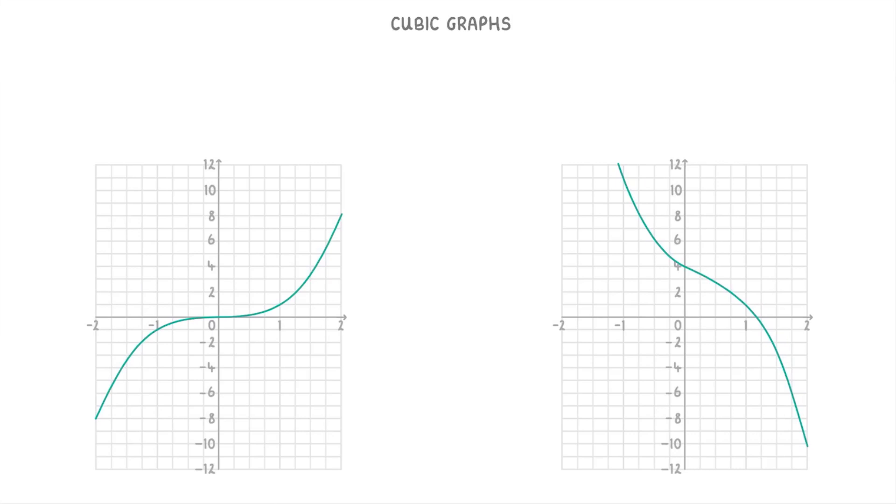The reason we call these graphs cubic is because their equations always contain an x cubed term. For example, this graph on the left, which is the most simple one you'll see, is just y equals x cubed.